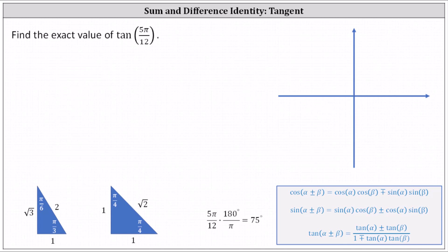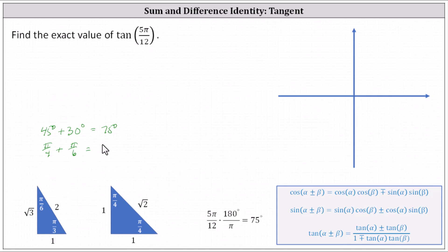It may be helpful to convert to degrees and then convert back to radians. The two most obvious angles we can use would be 45 degrees plus 30 degrees, which has a sum of 75 degrees, or in radians, pi divided by four plus pi divided by six equals five pi divided by 12.